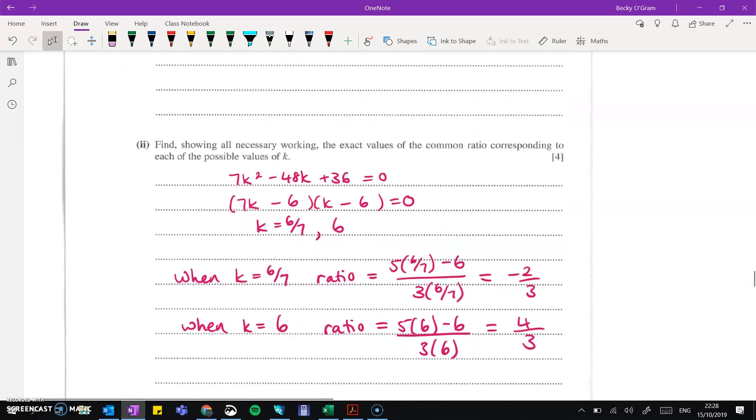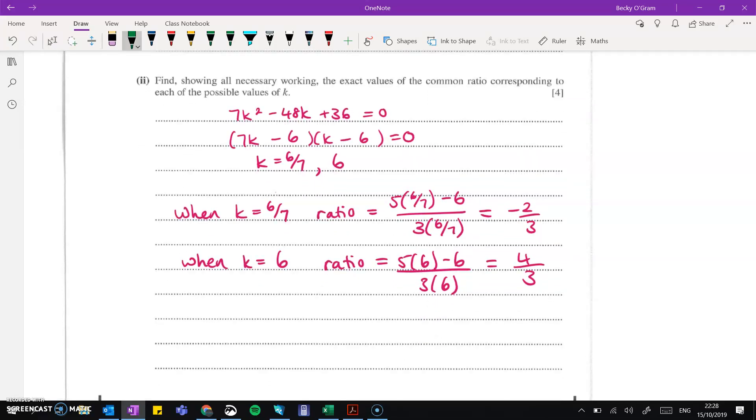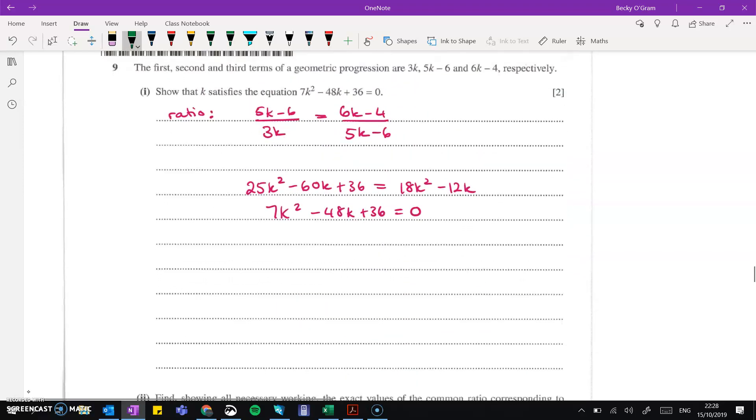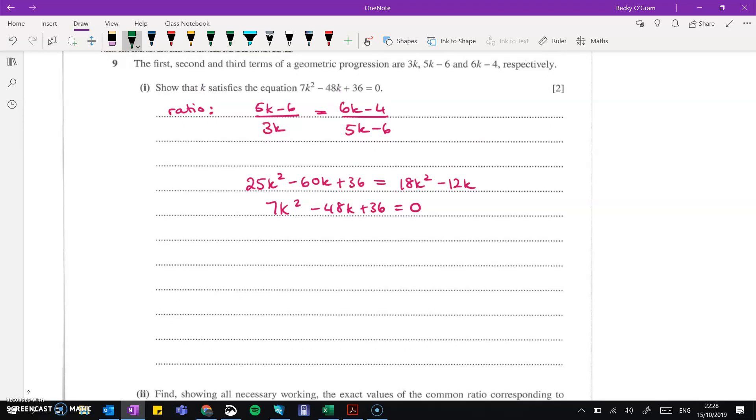So now continuing with that expression, we carry on and find the values of k. So factorizing gives us that k could be 6 over 7 or 6. Now with those values of k, we need to work out what the common ratio is when k is equal to those.